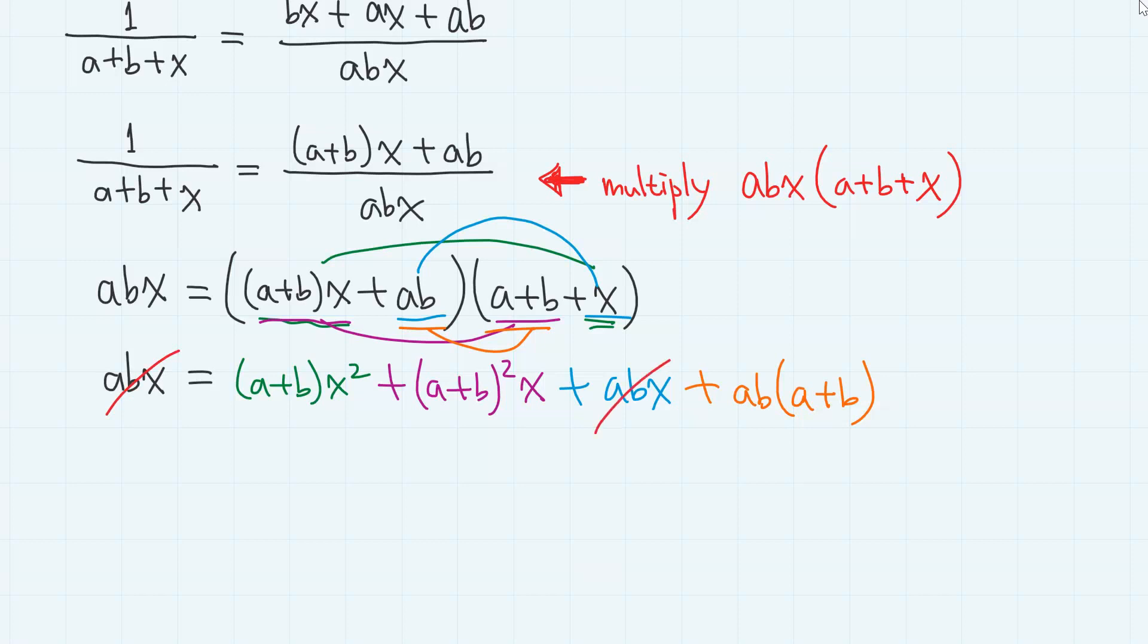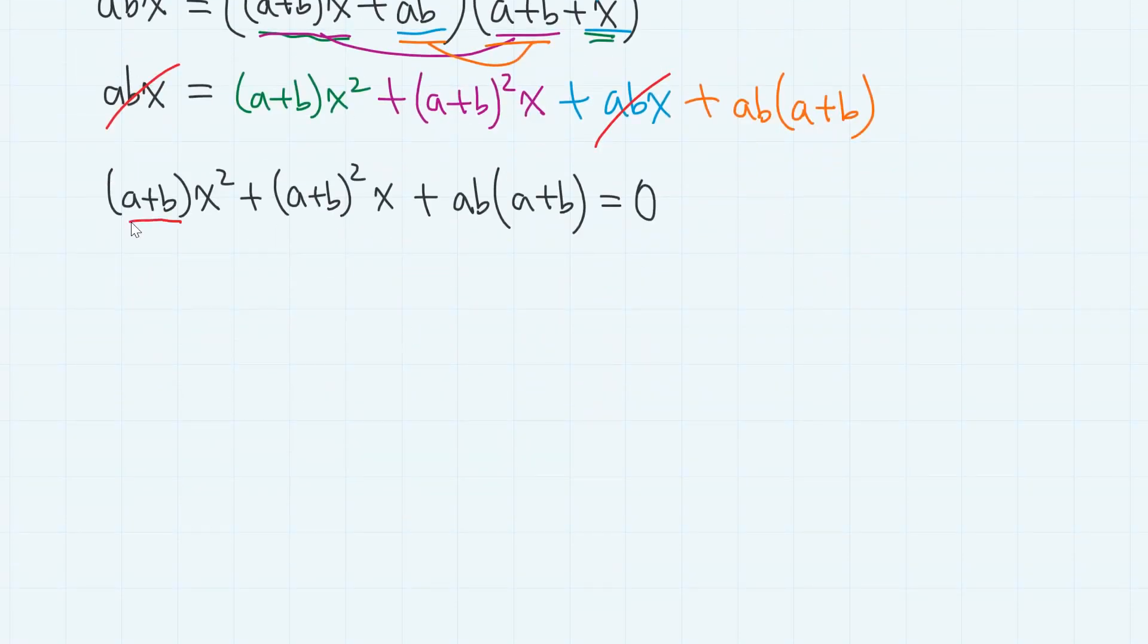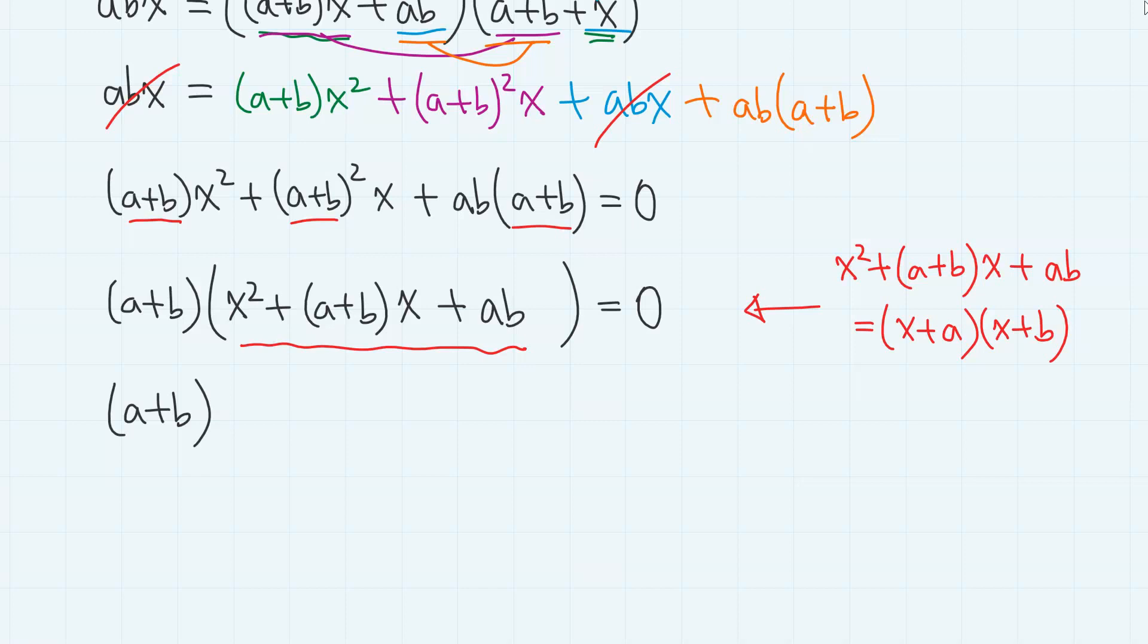So, notice that abx cancel out. So we have a plus bx squared plus a plus b squared x plus ab a plus b equals 0. So we have a common factor a plus b. So we have a plus b times x squared plus a plus bx plus ab equals 0. And this part right here, we can use this famous factorization formula. It is just an expansion of x plus a times x plus b.